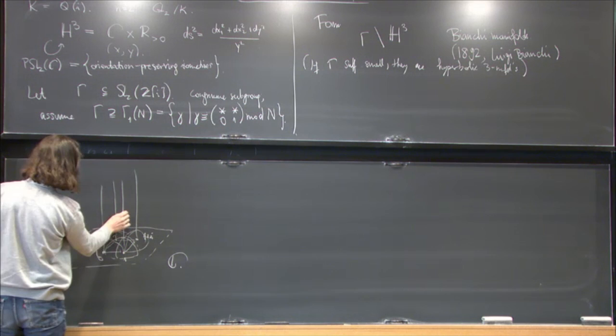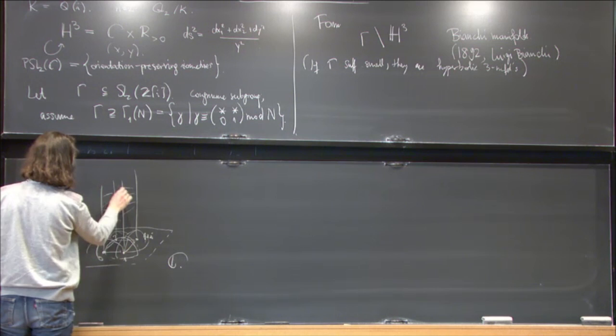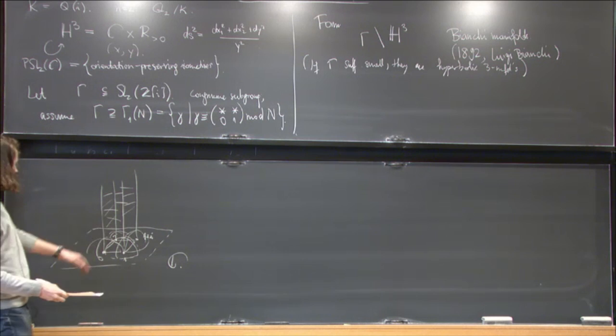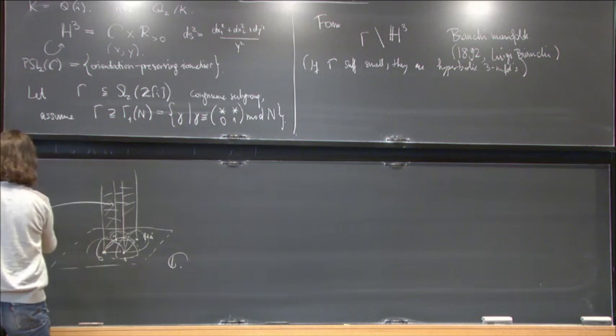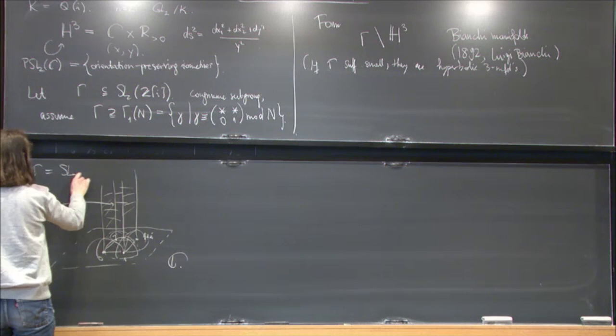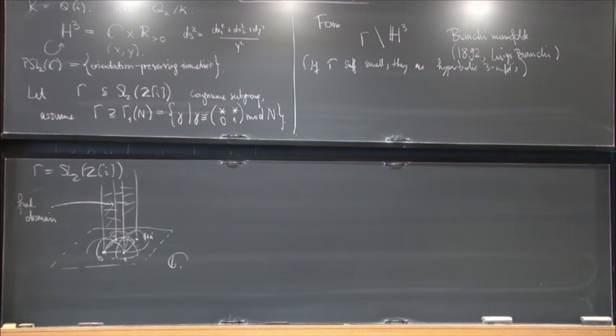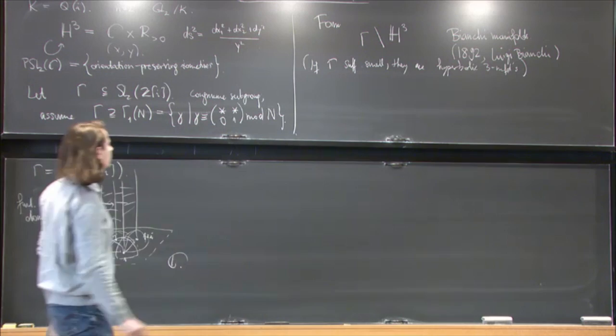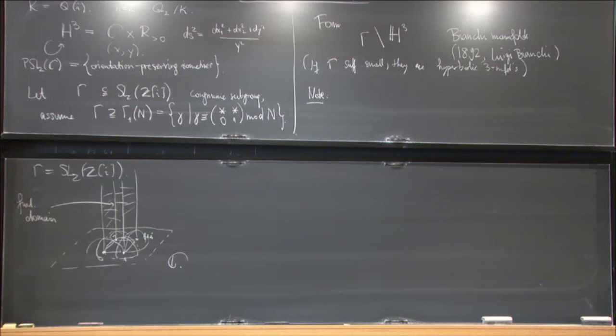And so you see that some of the picture also looks pretty similar to the case of some modular curves. So fundamental domain would somehow be the interior of this column which goes off to infinity. And then here it will have some spheres, parts of spheres which bound it. So this is in the case that gamma is the full congruence, the full group.